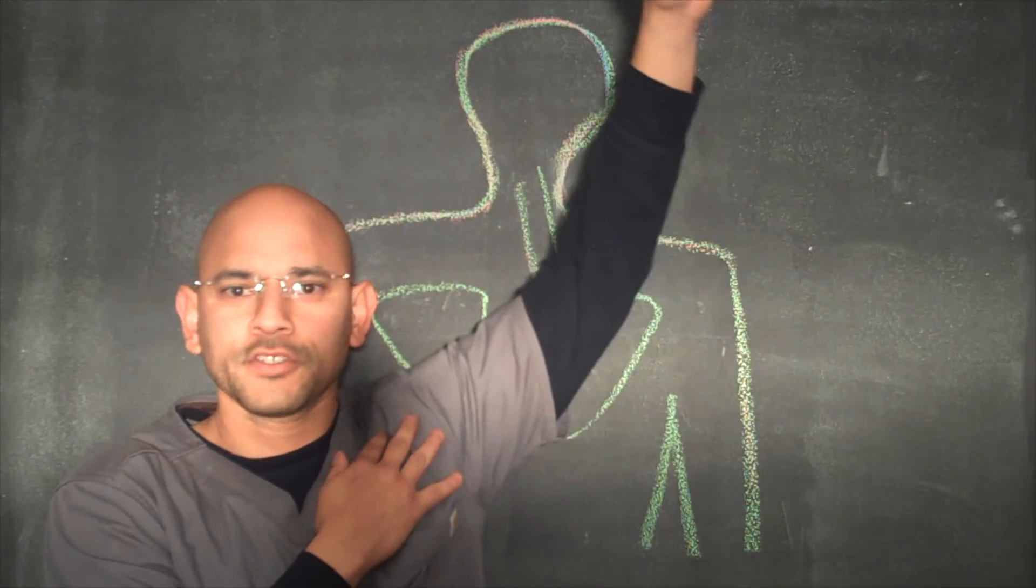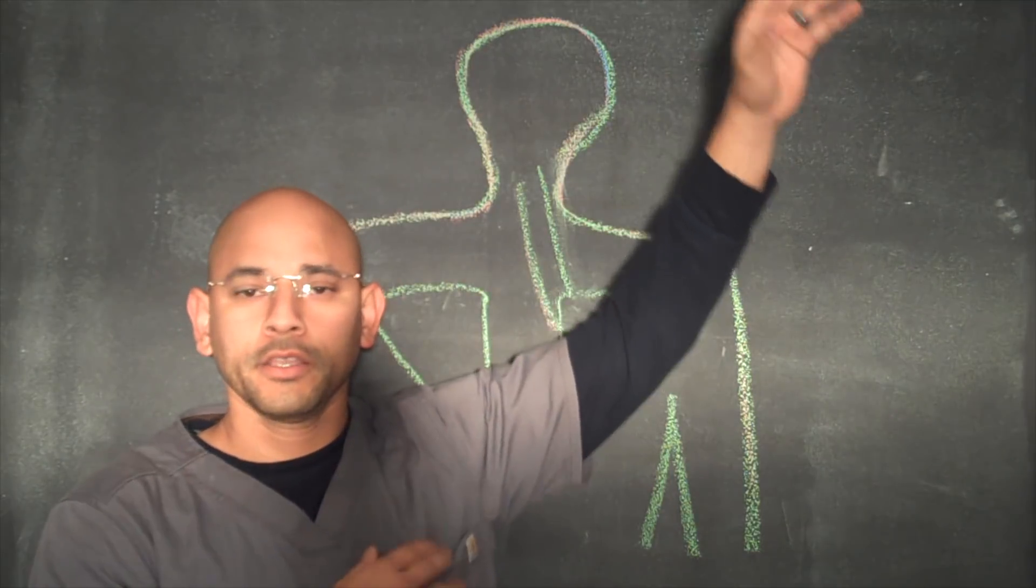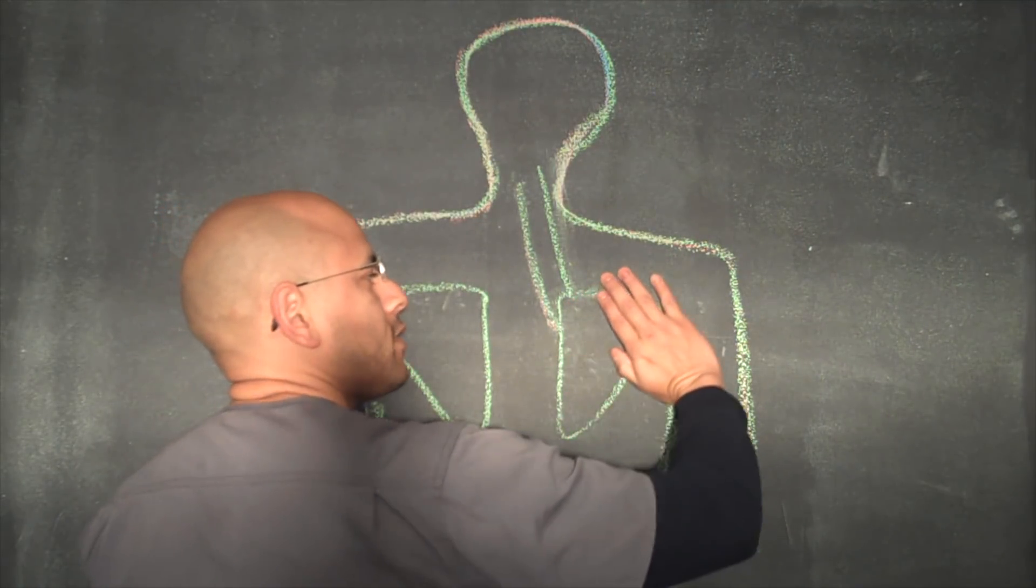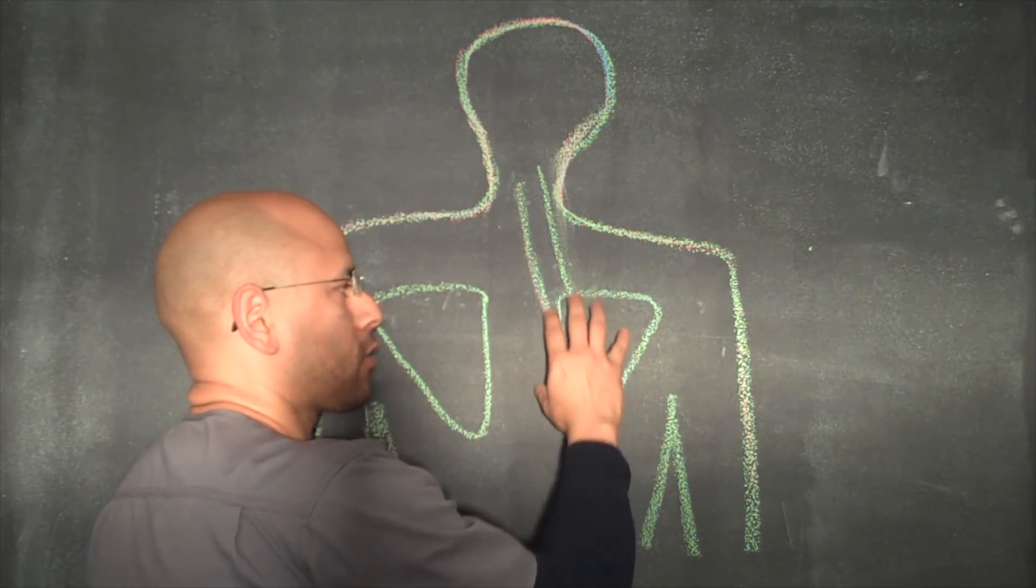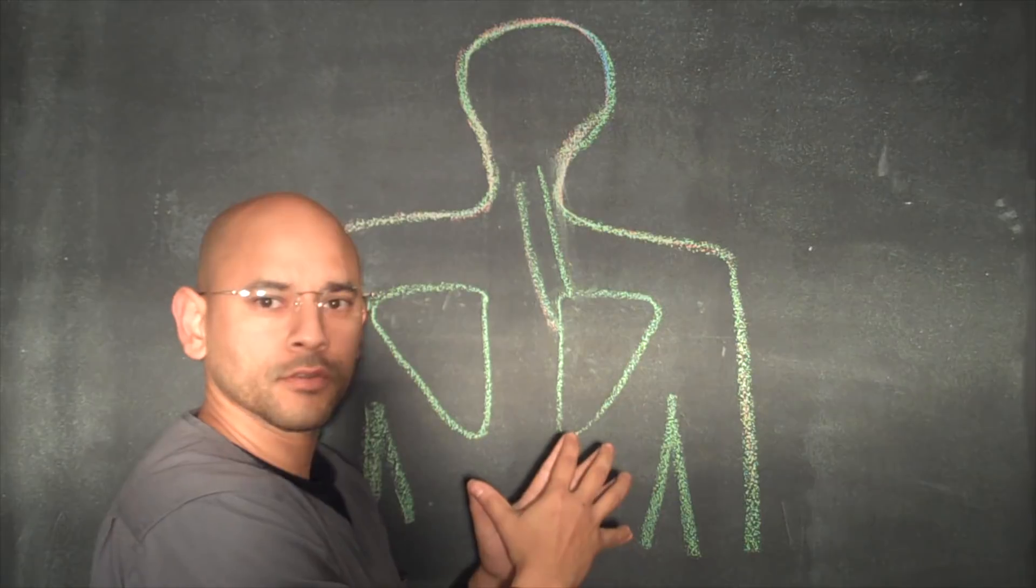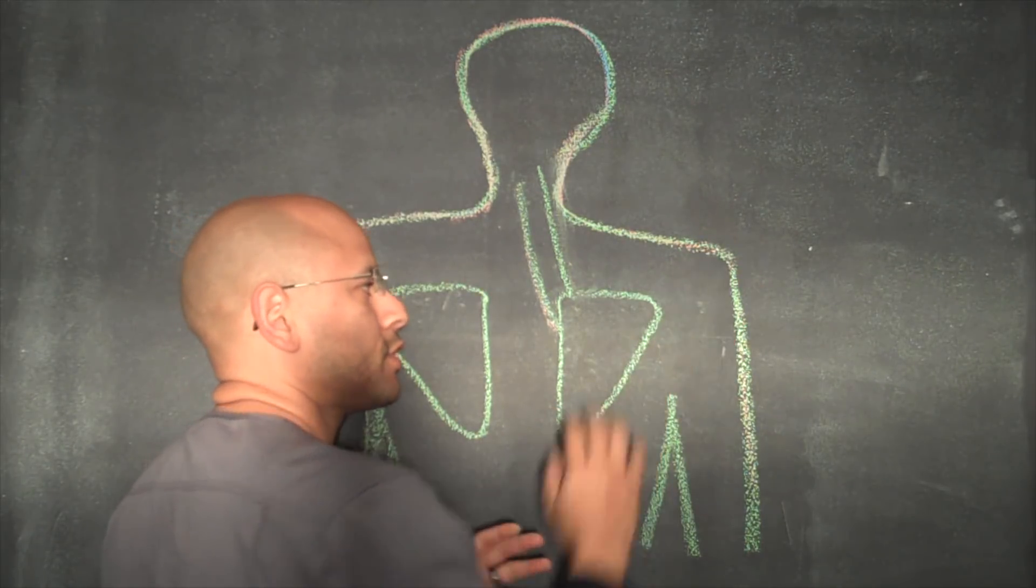The other third happens when the scapulae has to shift over in this direction. So if we have a scapulae that's not moving correctly because of weak muscles or tight muscles, then that's going to limit the range of motion in the shoulder.